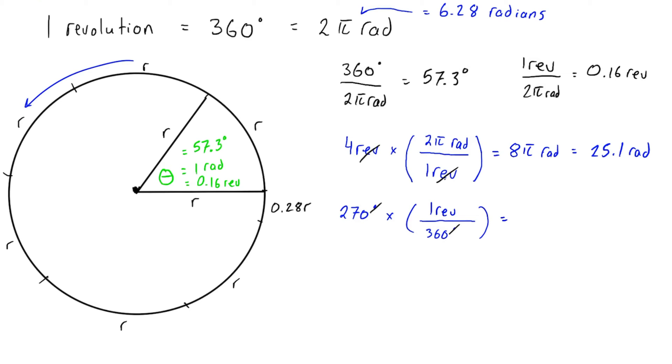The degrees here are going to cancel out with the degrees there, and 270 times one divided by 360 gives us 0.75 revolutions.